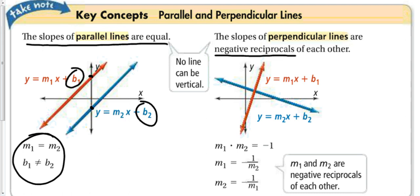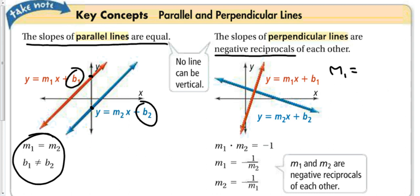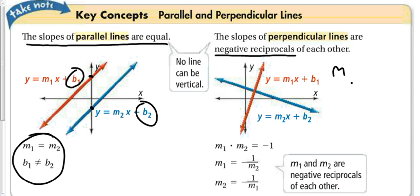Perpendicular lines have slopes that are negative reciprocals of each other — when you multiply the two slopes together you get −1. For example: if slope₁ = 2, then slope₂ = −1/2. If slope₁ = 3/4, then slope₂ = −4/3. If slope₁ = −1/5, then slope₂ = +5. The relationship is m₁ × m₂ = −1, or equivalently m₁ = −1/m₂.